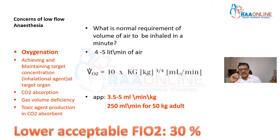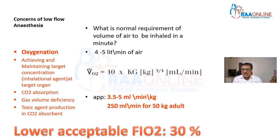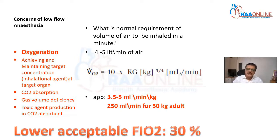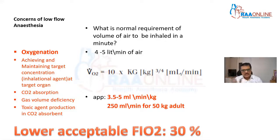To understand the oxygenation part, we need to understand what the requirement is. What is the amount of air inhaled in a minute — the normal requirement of volume of air to be inhaled per minute? That is called minute ventilation, which is roughly 4 to 5 liters. We will consider 5 liters per minute, which contains 21% oxygen. So 5 liters at roughly 21% comes to approximately 1 to 1.1 liters of oxygen.